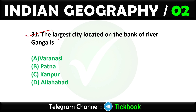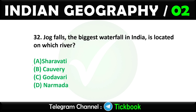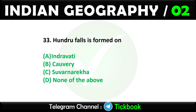Question thirty-one: The largest city located on the bank of river Ganga is. Option number C: Kanpur is the right answer. Question thirty-two: Jog Falls, the biggest waterfall in India, is located on which river? Option number A is the right answer: Sharavati. Question thirty-three: Hundru Falls is formed on. Option number C is the right answer: Subarnarekha.